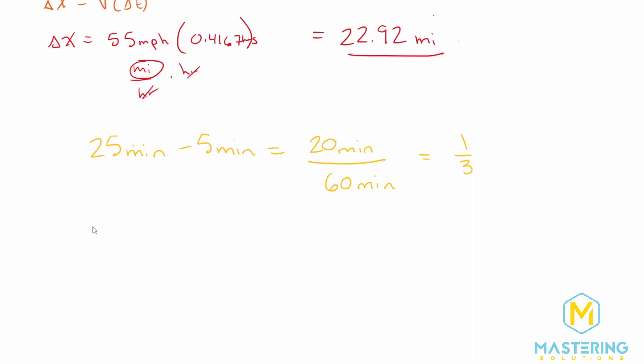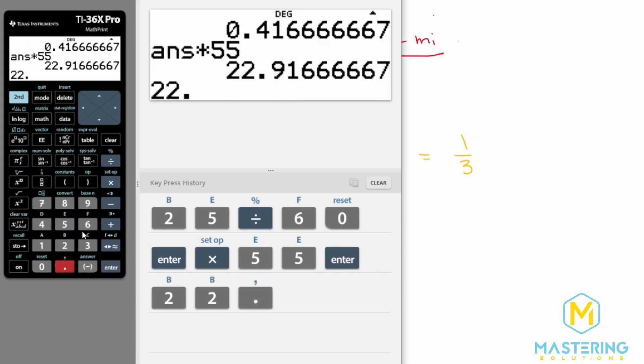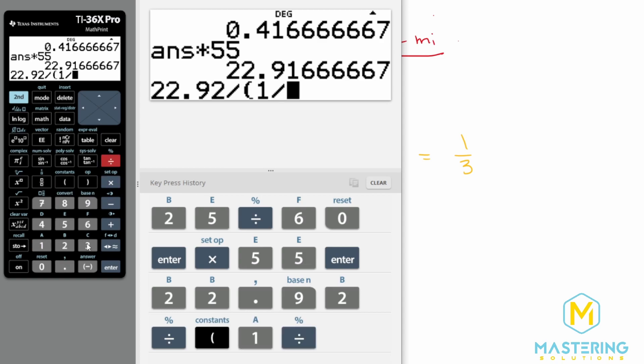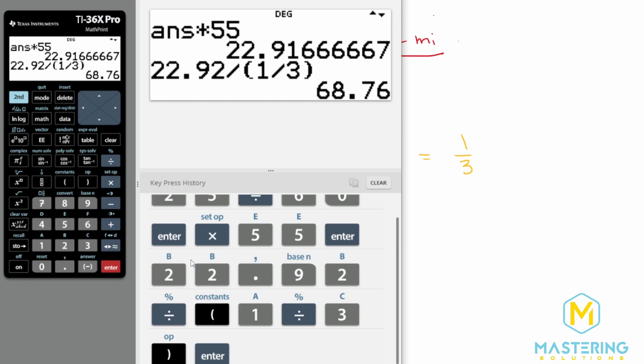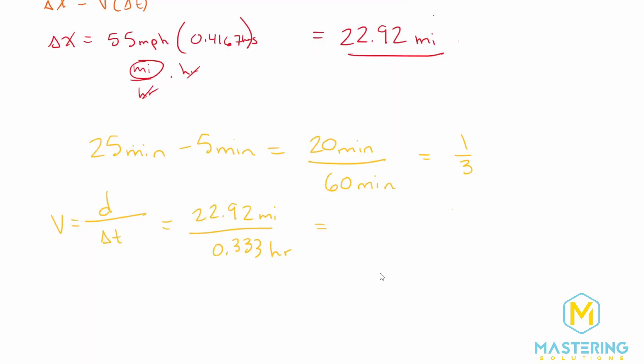Now we know the distance that he has to go, or the change in x, and we know the time that he has to make it up in. So we can plug in our values into the equation: 22.92 miles, and he has to do that in 0.333 hours. So 22.92 divided by one third gives us 68.76.